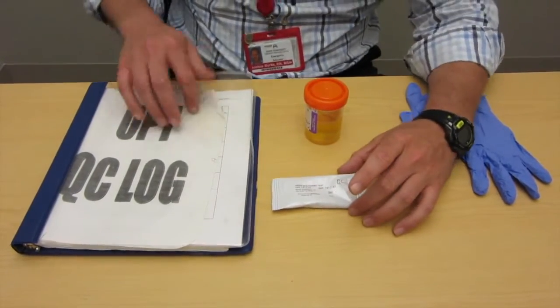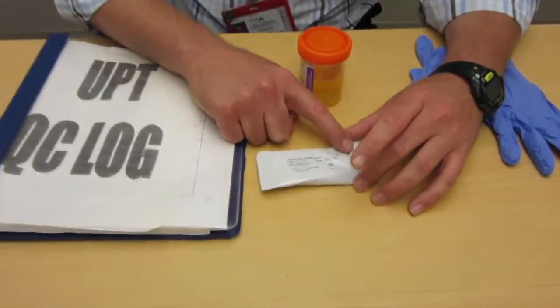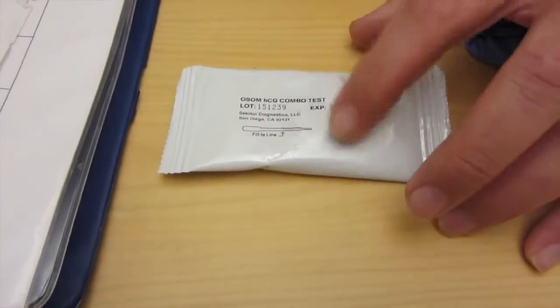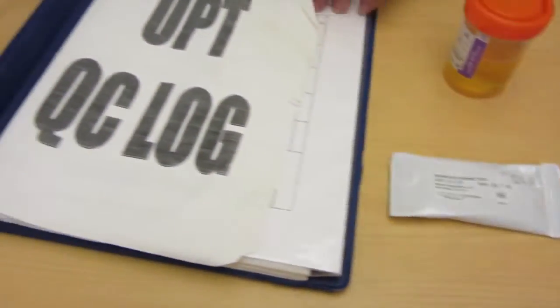Here's the actual test itself. I want to introduce you first of all to QCDN. You see this lot number here 151239. What we're supposed to do is we're always supposed to take a look at that lot and then find that lot over here in the binder.